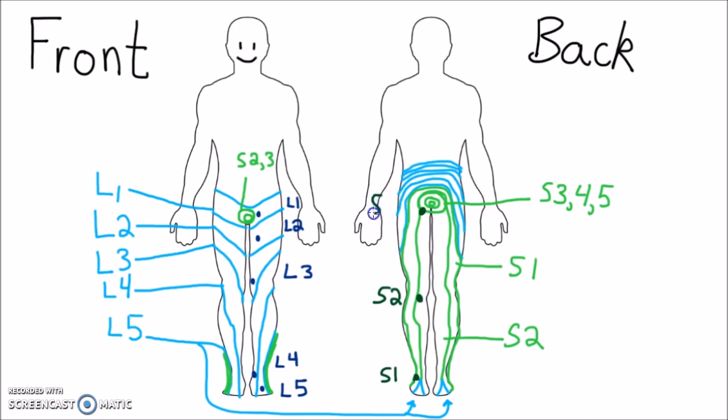S3, over the tuberosity of the ischium or infragluteal fold. S4 and S5, in a perianal area less than 1 cm lateral to the mucocutaneous zone.